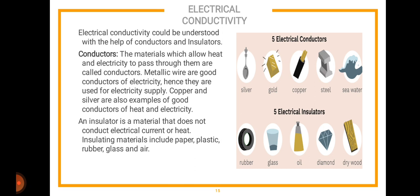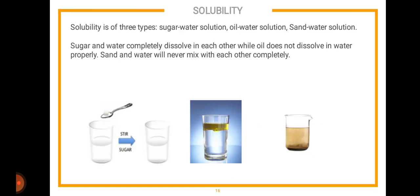Electrical conductivity can be understood with the help of conductors and insulators. Conductors are materials which allow heat and electricity to pass through them. Metallic wires are good conductors of electricity and are used for electrical supply; copper and silver are also good conductors of heat and electricity. Insulators, on the other hand, do not conduct electrical current or heat — insulating materials include paper, plastic, rubber, glass, and air. For example, a rubber handle on a steel spoon prevents you from feeling the heat.